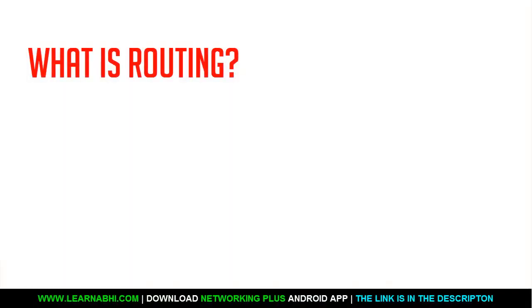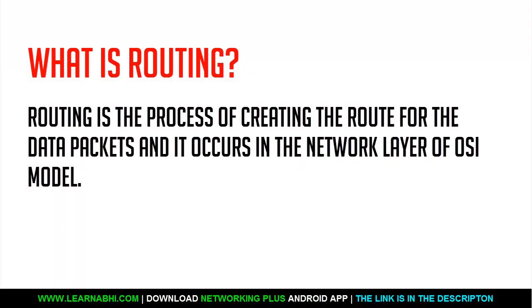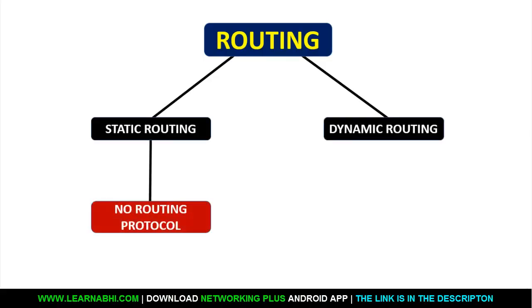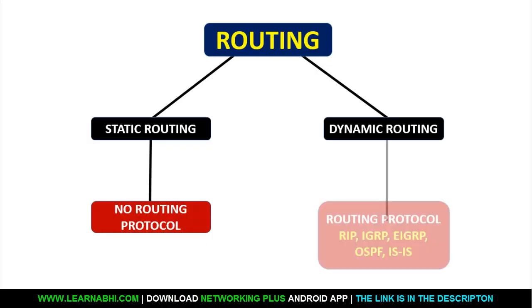Routing is the process of creating the route for data packets, and this process occurs in the network layer of the OSI model. There are two types of routing: static routing and dynamic routing. Static routing does not use any routing protocol. On the other hand, dynamic routing uses routing protocols such as RIP, IGRP, EIGRP, OSPF, ISIS, etc.